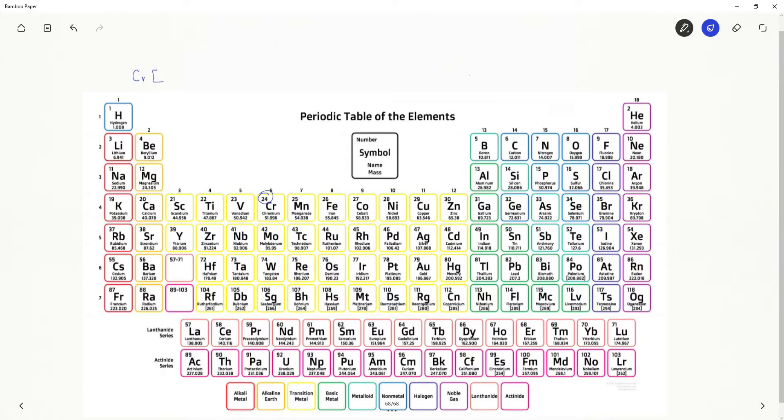So chromium, that would be argon, fourth period, 4s 1, 2, 3d 1, 2, 3, 4.